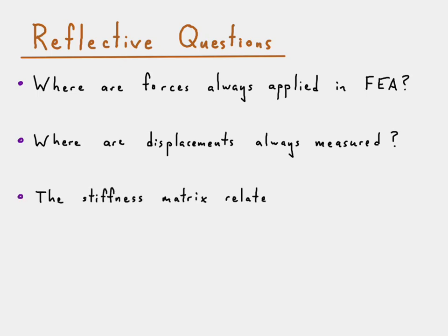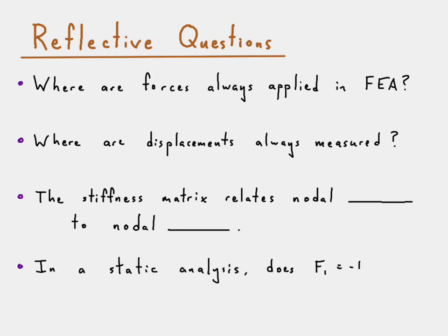The next question is: the stiffness matrix relates nodal blank to nodal blank. And the final question is: in a static analysis, does force F1 equal the negative of force F at node two? The follow-on question is: is the displacement at node one necessarily equal and opposite to the displacement at node two?